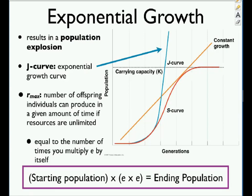Exponential growth results in a population explosion — it overshoots the carrying capacity and grows really fast. You can talk about r-max, which is the number of offspring individuals can produce in a given amount of time if resources are unlimited. There's an equation for that but it hasn't appeared on the AP exam. This is common with bacteria and algae — things with really short generation times that double quickly.